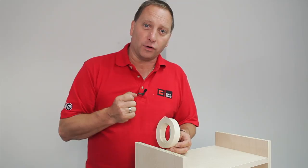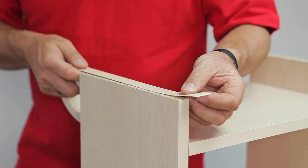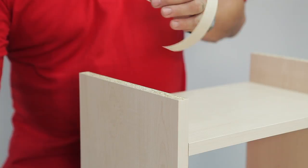Pull off enough edging tape for your panel and then snap it. The edging is going to go on here.